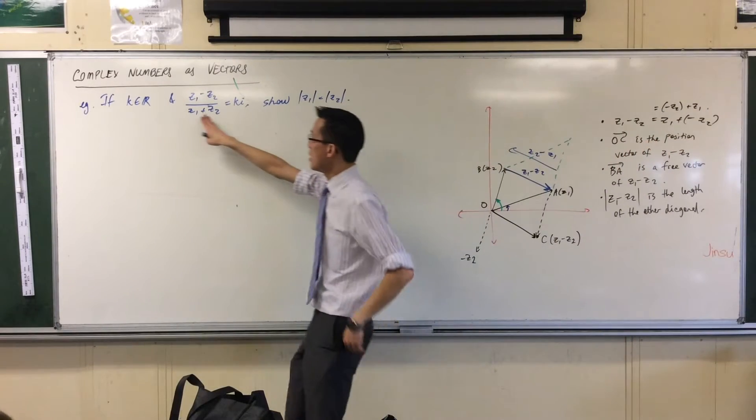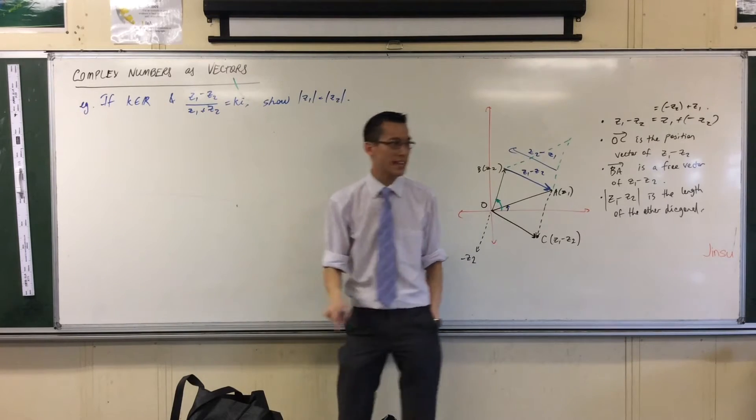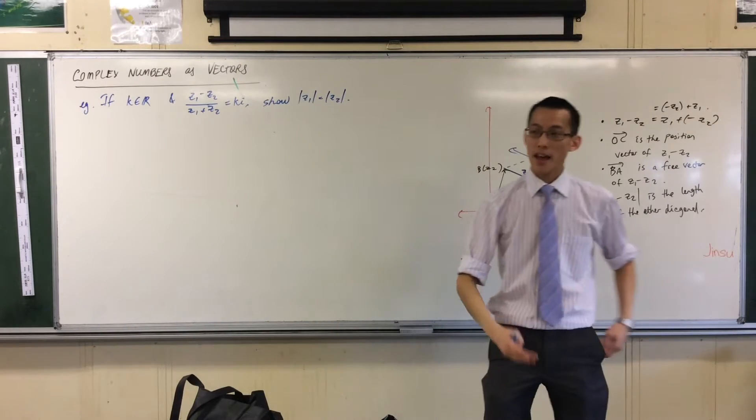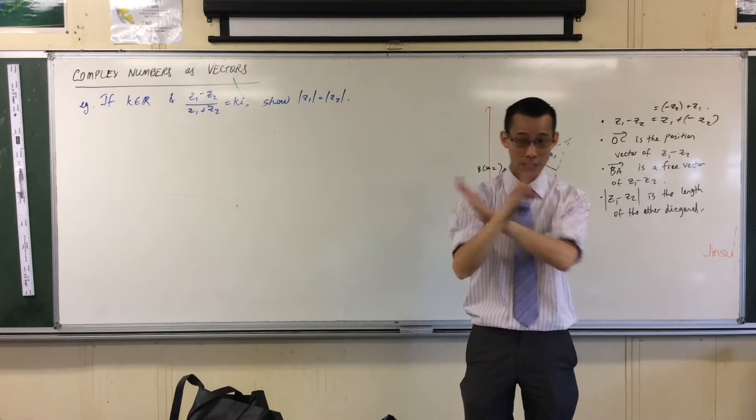So I know that k is a real number, and z1 minus z2, z1 plus z2, I know what they represent - they represent diagonals in a parallelogram. So let's draw this thing.